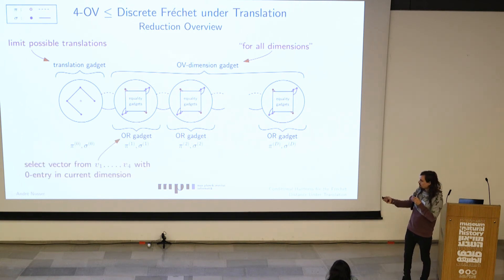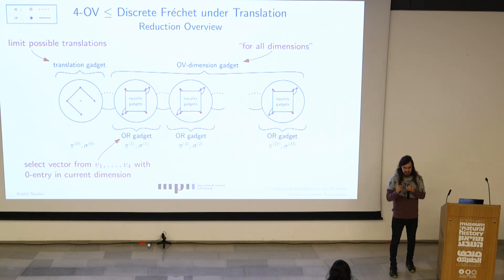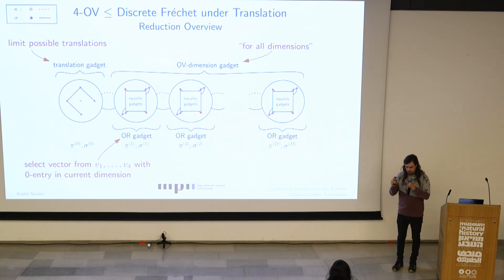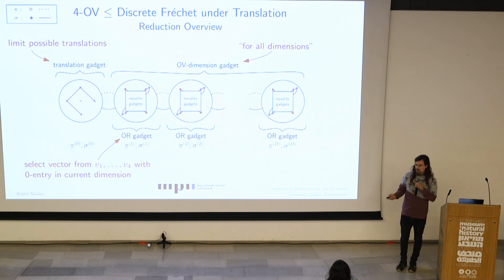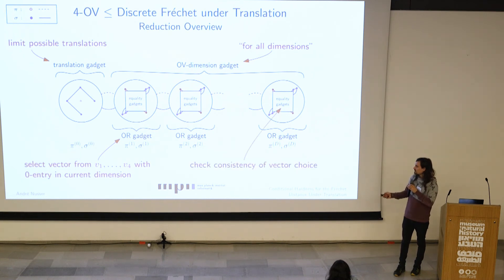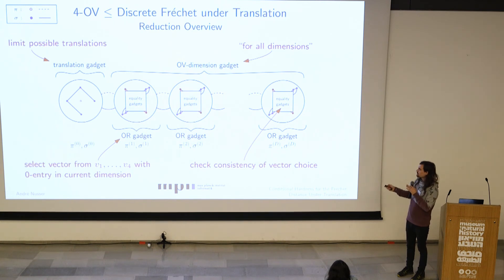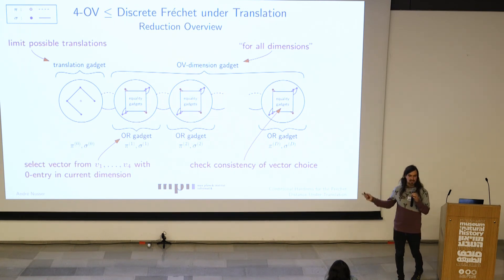Then there's the OR gadget I already mentioned, and an equality gadget. The OR gadget allows us to select the right vectors by selecting the right parts of the curve to check for zero entries. The equality gadget ensures consistency — the translation fixes the four vectors we choose, and we have to make sure we don't cheat and remain consistent across different dimensions.